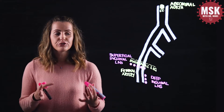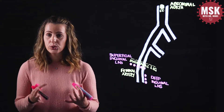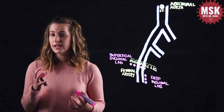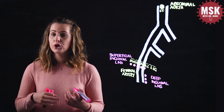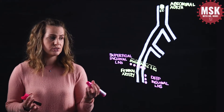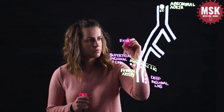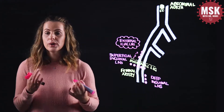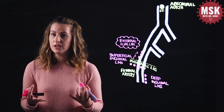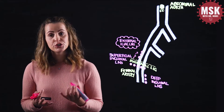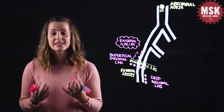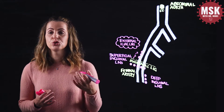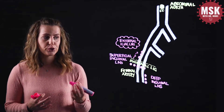From here, lymph from the superficial inguinal nodes will drain predominantly to the external iliac lymph nodes, which are adjacent to the vessels. Some lymph from the superficial group may also drain to the deep inguinal lymph nodes before coursing up to the external iliac node group.